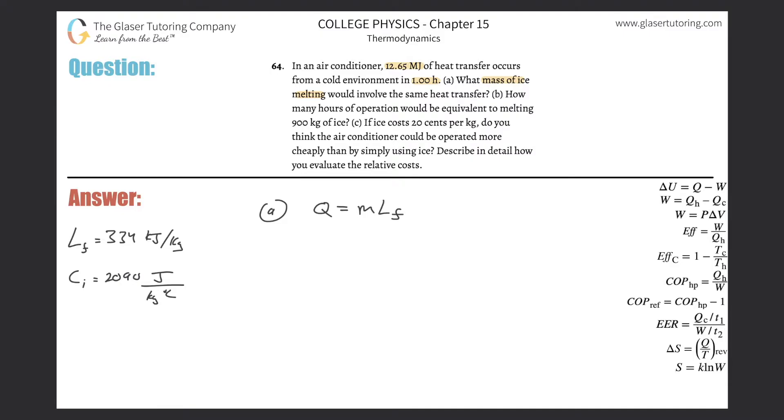So they're basically asking us for mass, so we have to solve it for mass. It's Q over the latent heat of fusion. So the heat necessary that they're talking about is 12.65 megajoules, but we need that in terms of joules, so just take that and multiply it by 10 to the 6. Divide that then by the latent heat of fusion.